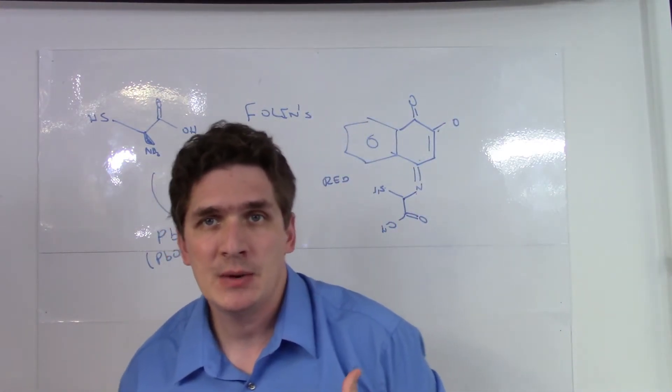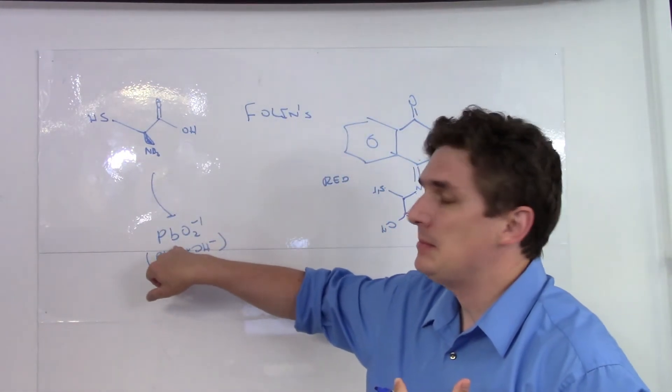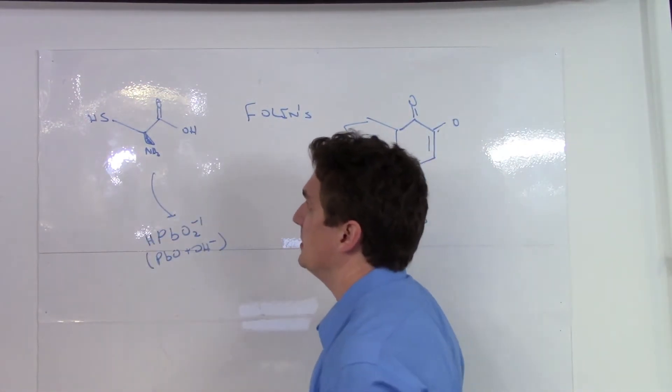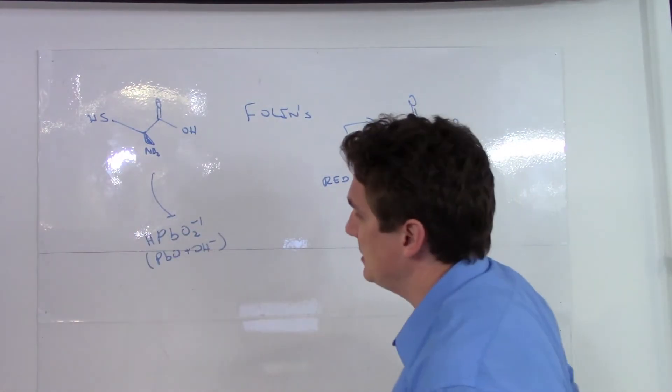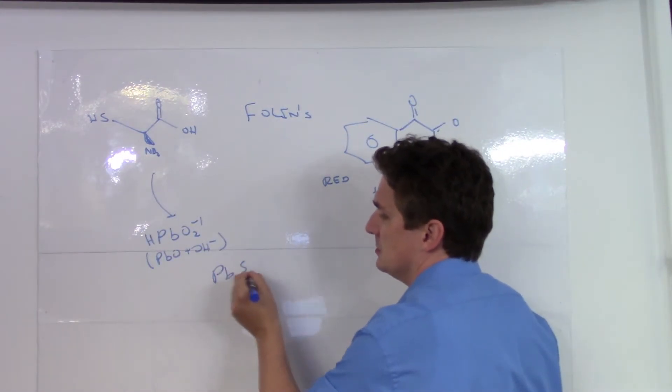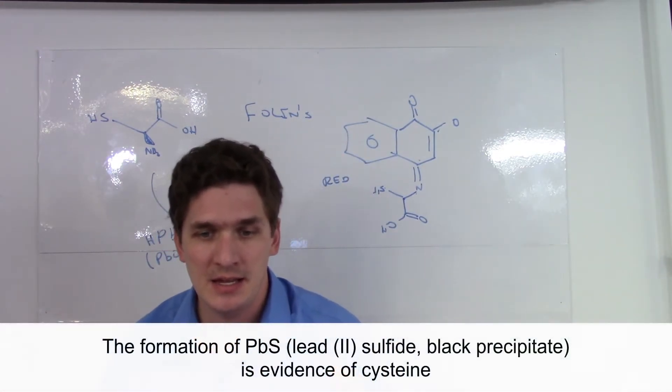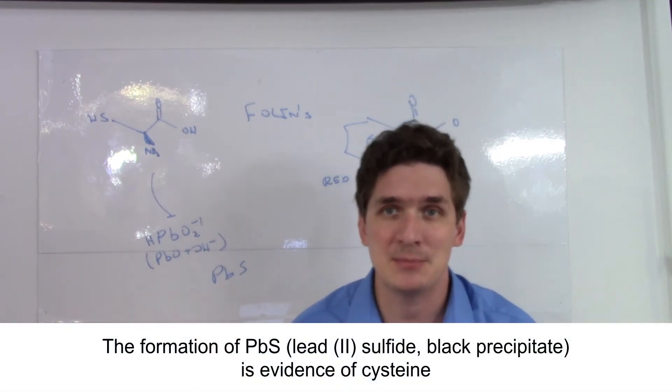What happens is that we get a reaction of the plumbite ion, PbO2 minus 1, with this complex and we end up getting lead(II) sulfide. This lead(II) sulfide is a black precipitate.